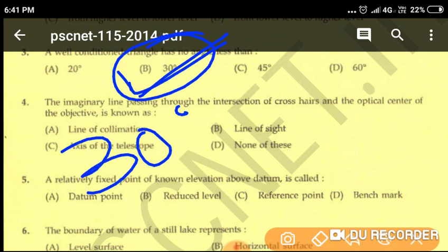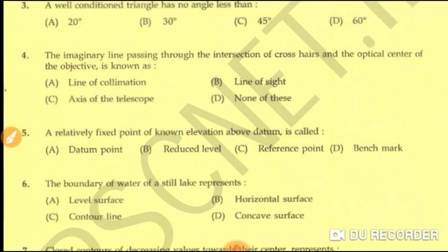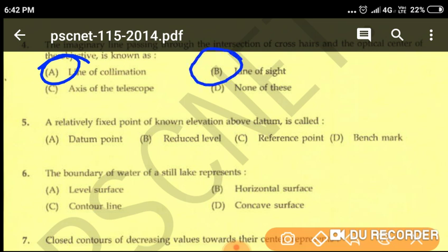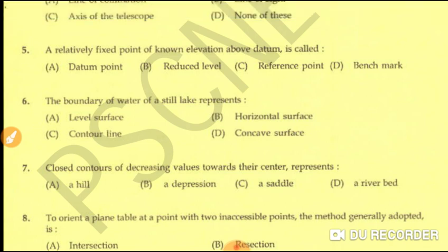Question number four: the imaginary line passing through the intersection of cross hairs and the optical center of the objective is known as — option A: line of collimation/axis of telescope, option B: line of sight, option D: none of these. The imaginary line passing through the intersection of cross hairs and the optical center is known as the line of collimation as well as the line of sight. Both option A and option B are correct.